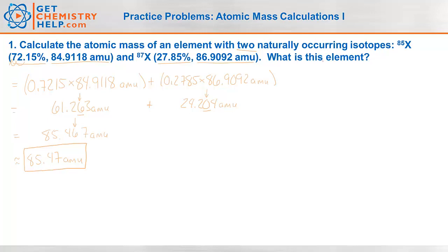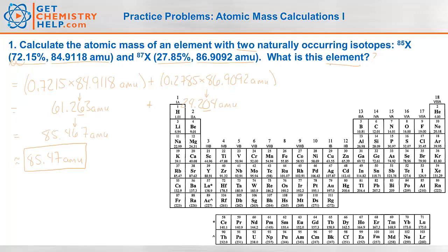Well, the question was, what was this element? So I'll just pull up a copy of the periodic table here. Let's see if we can find an element that's around 85.47. So which element do you see that it might be? Well, it looks like it must have been rubidium because its mass was 85.47. So our unknown element must be rubidium.